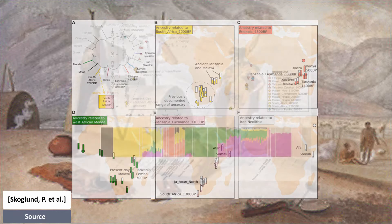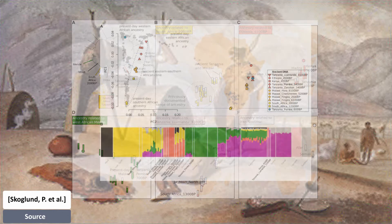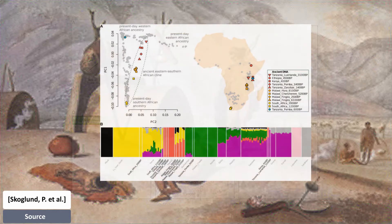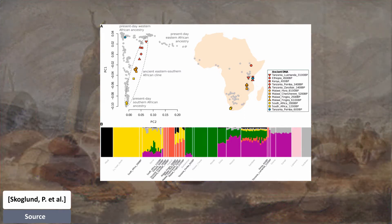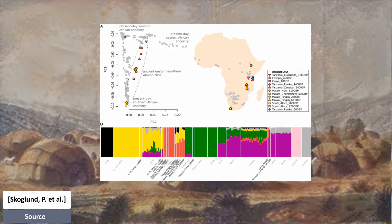They found an ancient cline of Southern and Eastern African hunter-gatherers, and that ancestry closely related to the ancient Southern Africans was present much further north and east in the past than it is today. The Hadza group in Tanzania can be modeled as deriving all their ancestry from a lineage related to ancient Eastern Africans, such as the ancient Ethiopian individual. However, this lineage appears to have contributed little ancestry to present-day Bantu speakers in Eastern Africa, who instead trace their ancestry to a lineage related to present-day Western Africans.